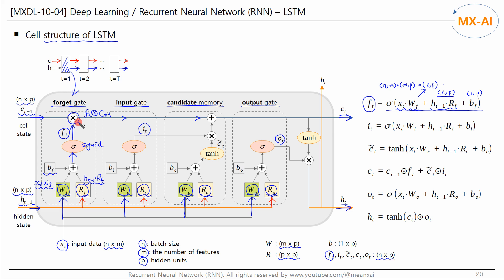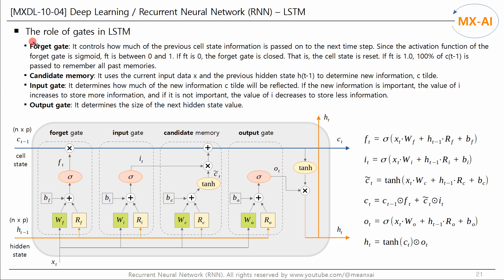This is the currently widely used LSTM cell structure. The FORGET gate controls how much of the previous cell state information is passed on to the next time step. The output FT times CT minus 1 is passed to the next step. Since the activation function of the FORGET gate is sigmoid, FT is between 0 and 1. If FT is 0, the FORGET gate is closed — that is, the cell state is reset and the LSTM completely forgets past memories. If FT is 0.5, only 50% of CT minus 1 is passed. And if FT is 1.0, 100% of CT minus 1 is passed to remember all past memories.